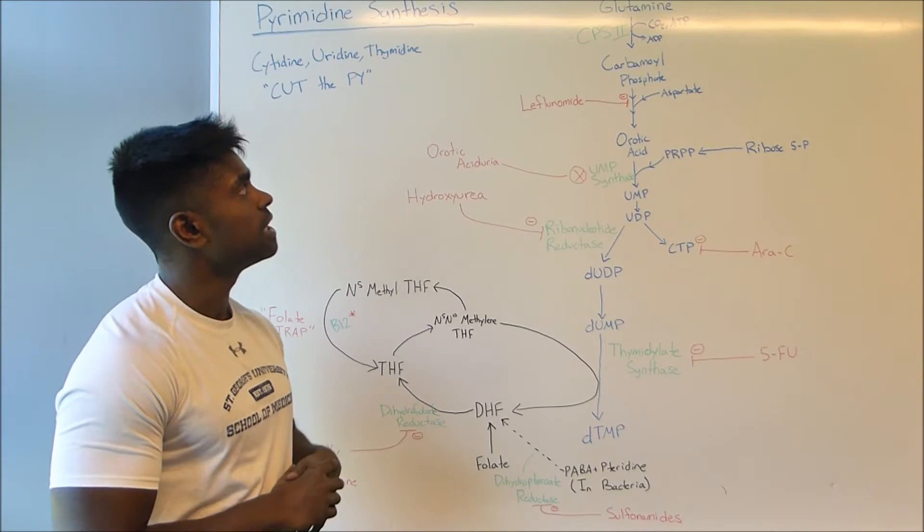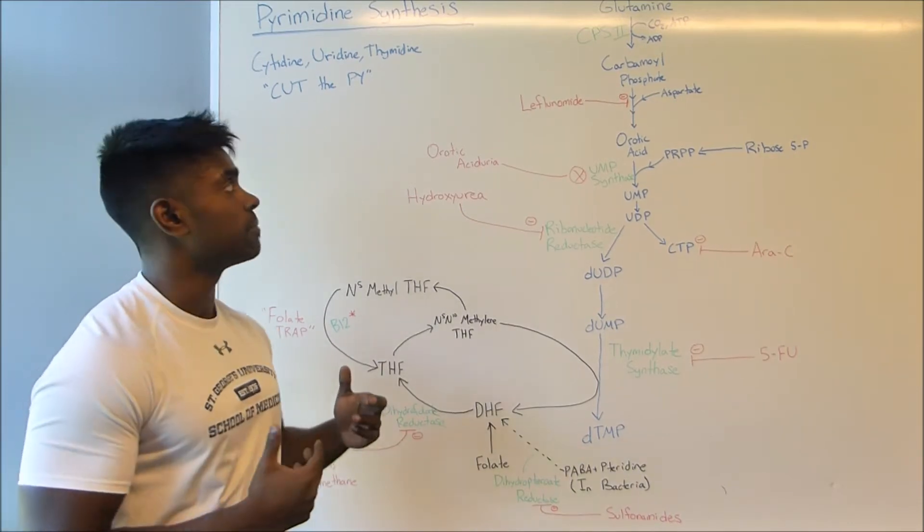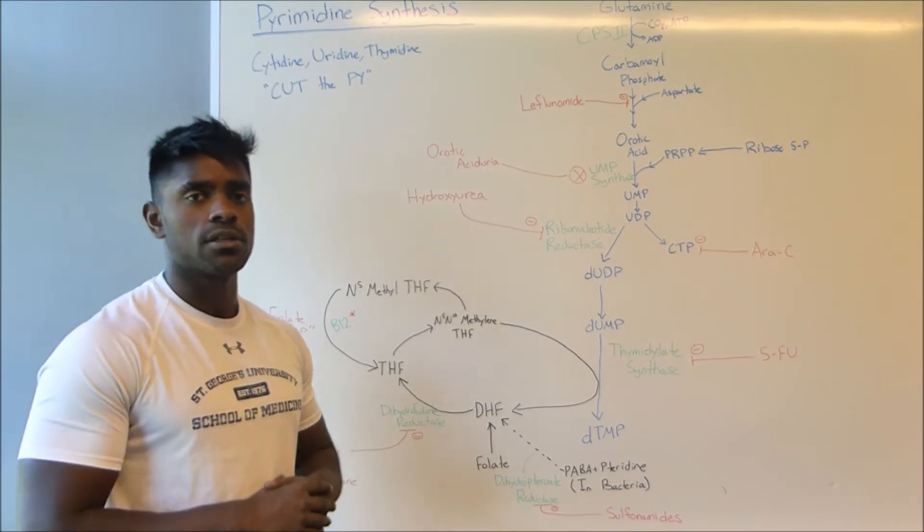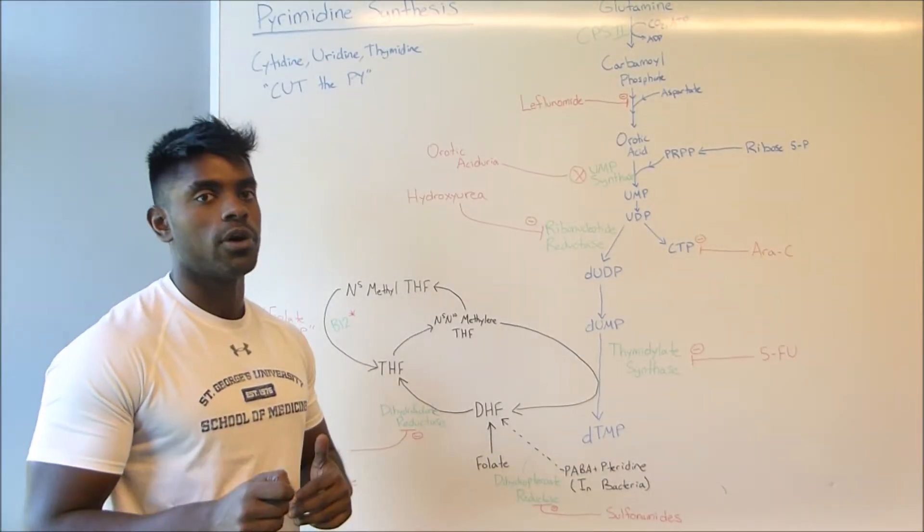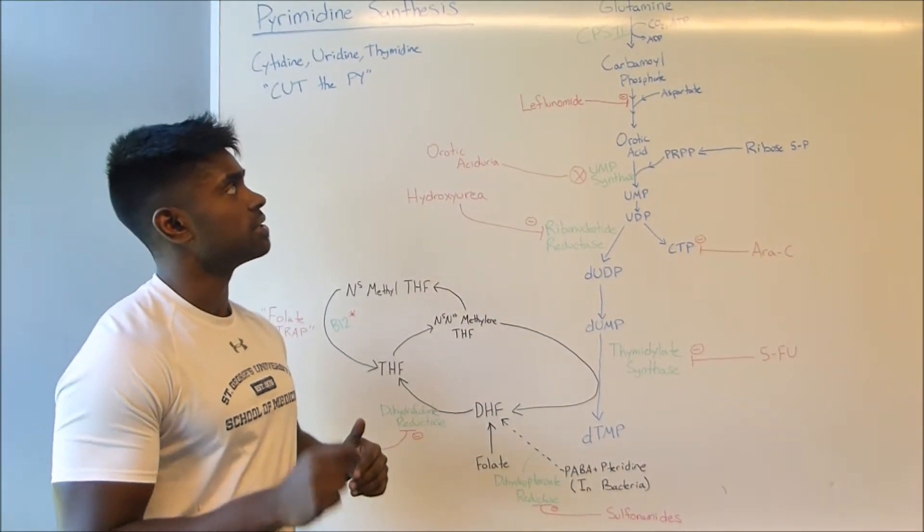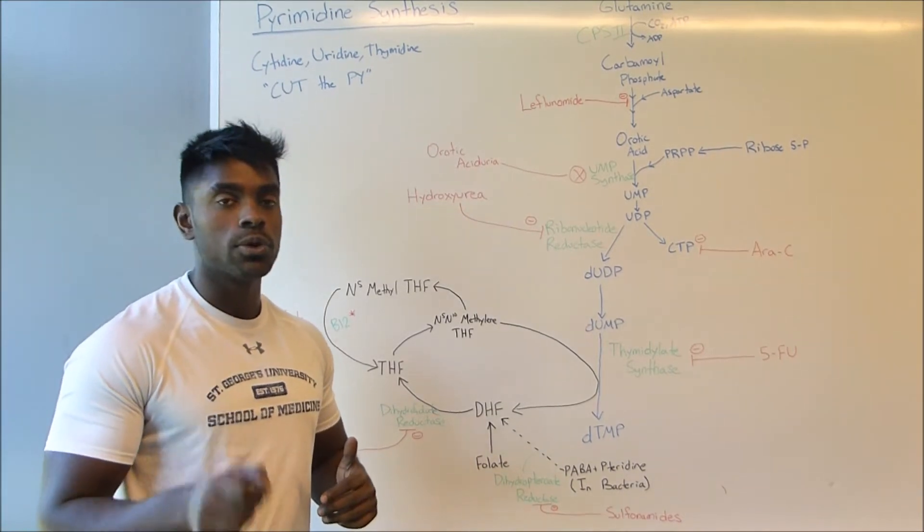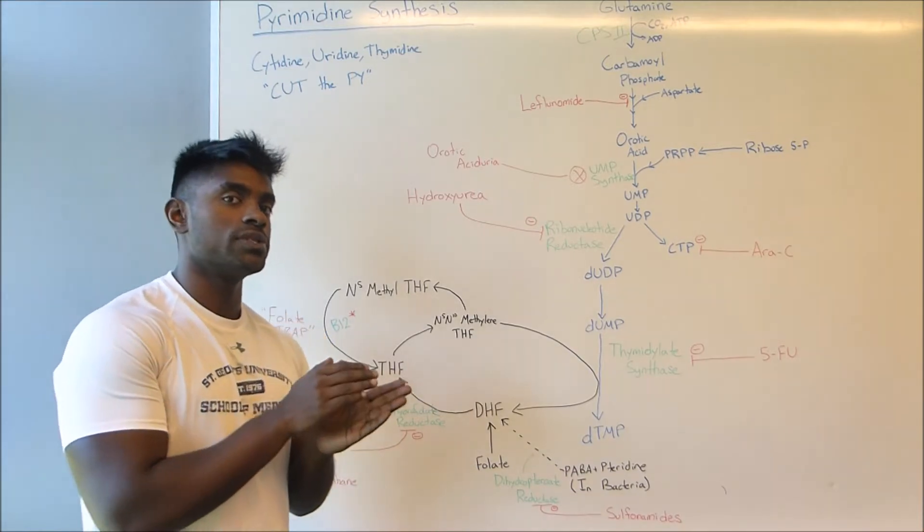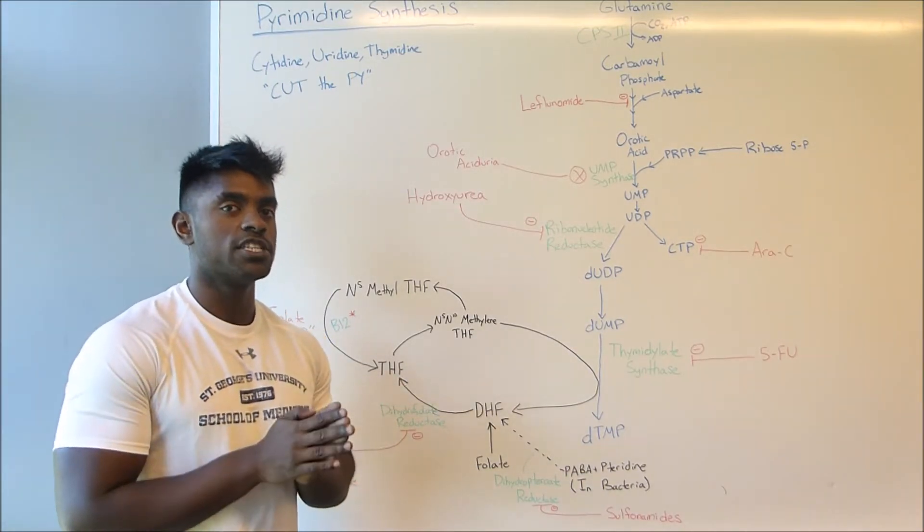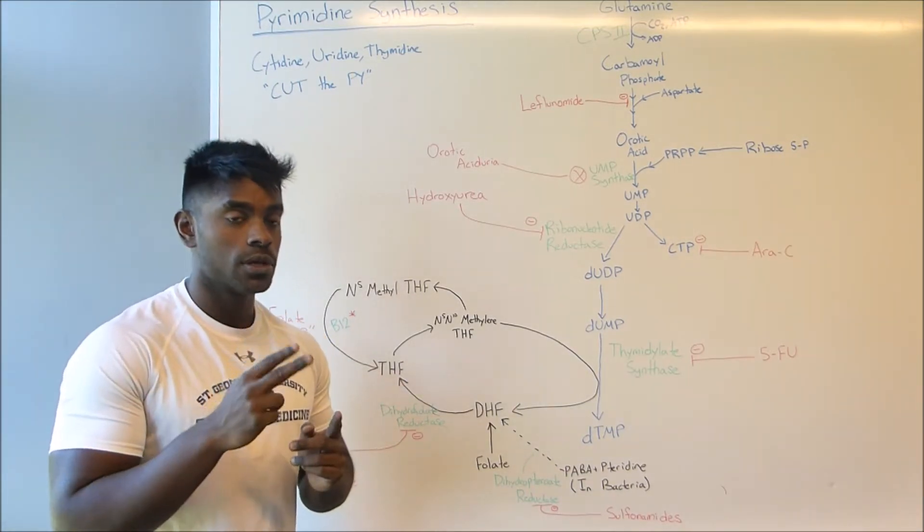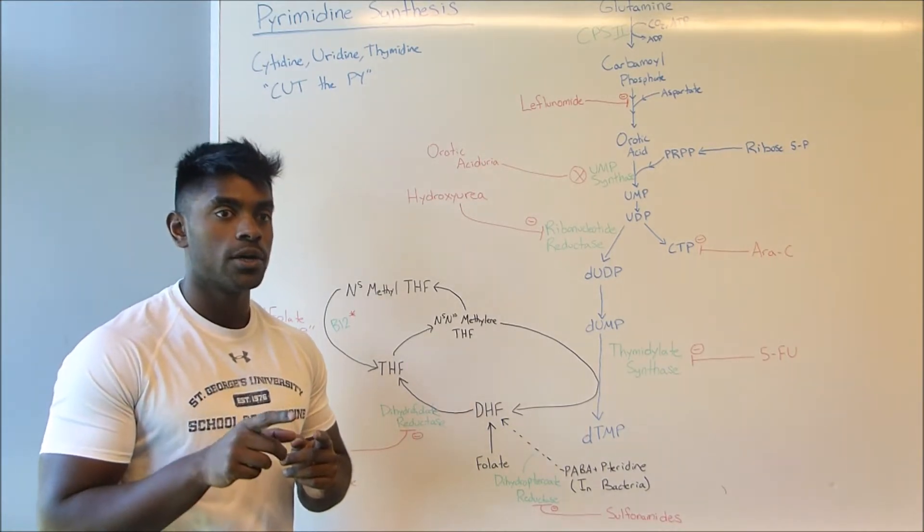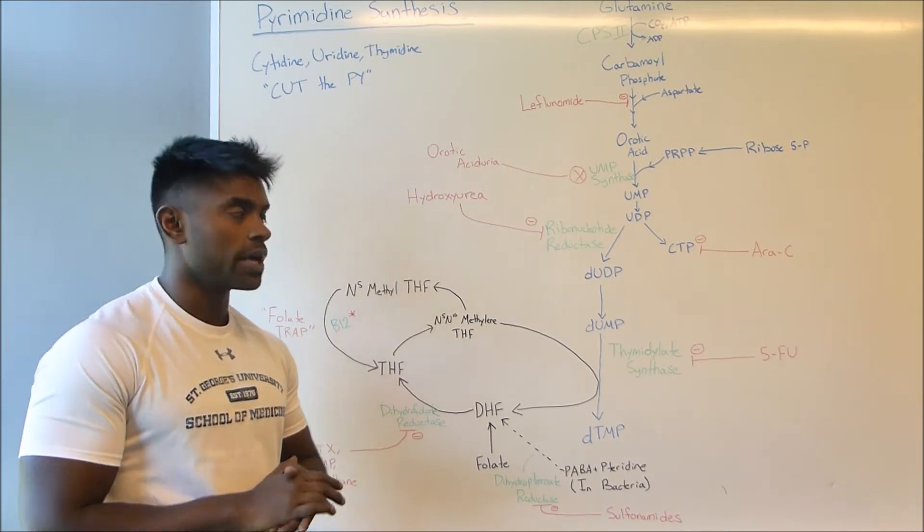Now the next thing we want to talk about is how exactly are we going to make these pyrimidines. So the first thing you have to know is our first goal is to make carbamoyl phosphate. This is done using the amino acid glutamine and CO2 and ATP, and also this is going to be done using the enzyme carbamoyl phosphate synthetase 2. Remember that, number 2, not to be confused with CPS1 which is used in the urea cycle. That's very important.